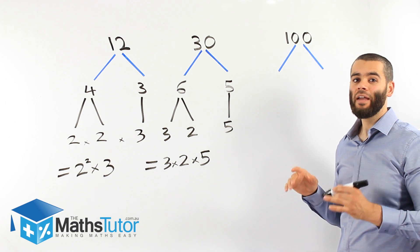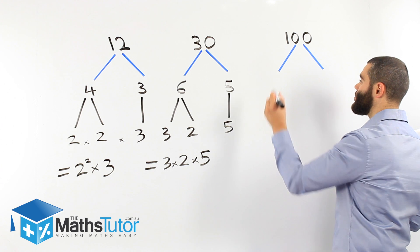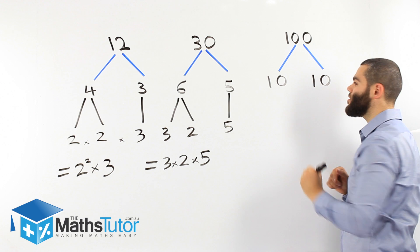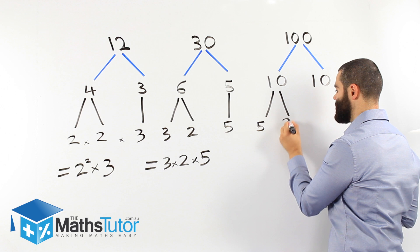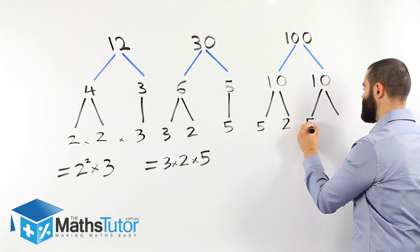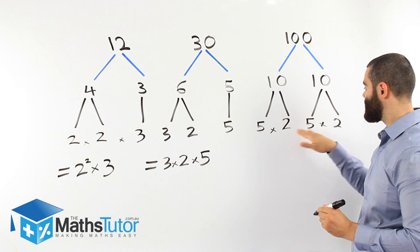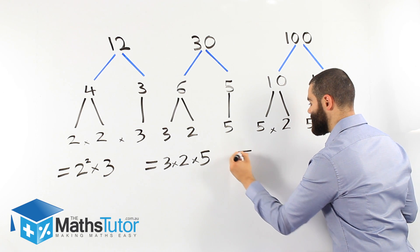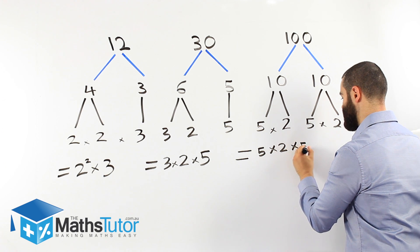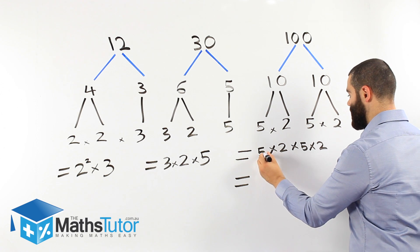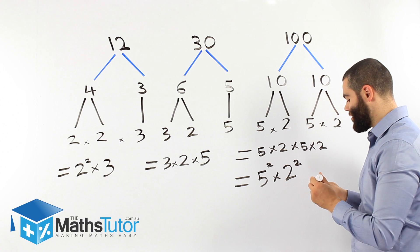Now for one hundred. You can use factors like twenty-five and four, twenty and five, or fifty and two — any factors of one hundred work. I'm going to choose ten and ten, since ten times ten is one hundred. Ten is a composite number, so it breaks down further into five times two. Both tens break down the same way: five times two and five times two. So we have five times two times five times two, which simplifies to five squared times two squared.